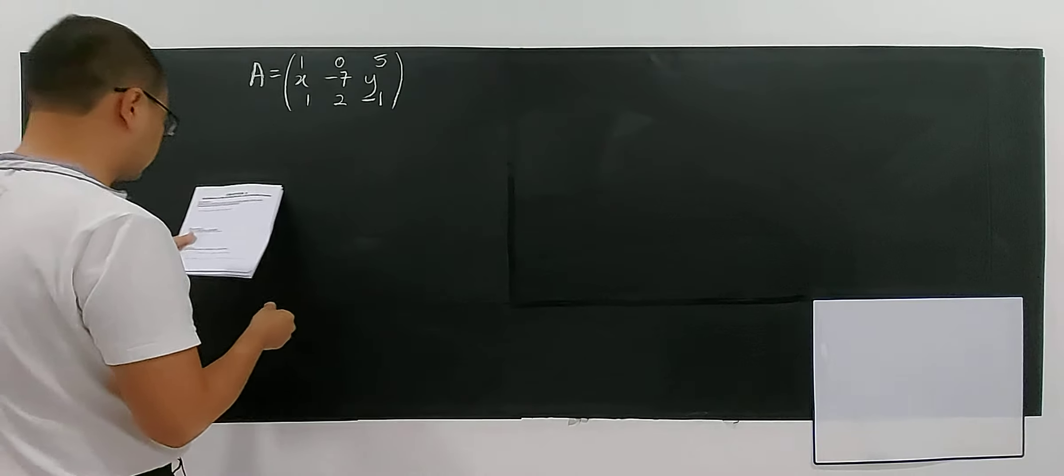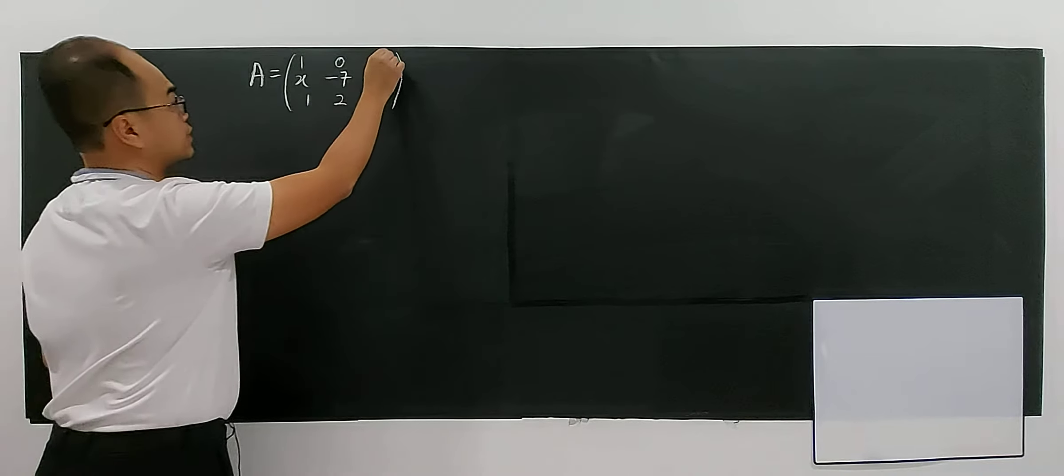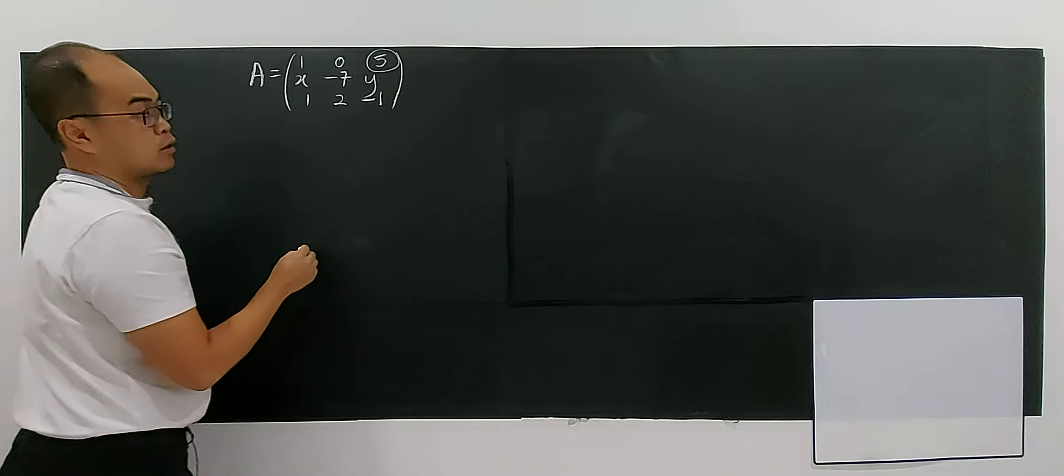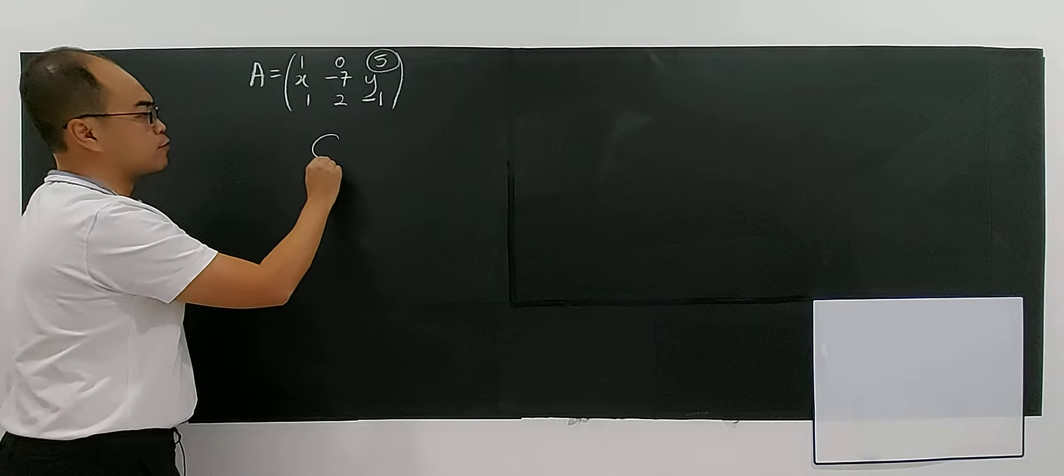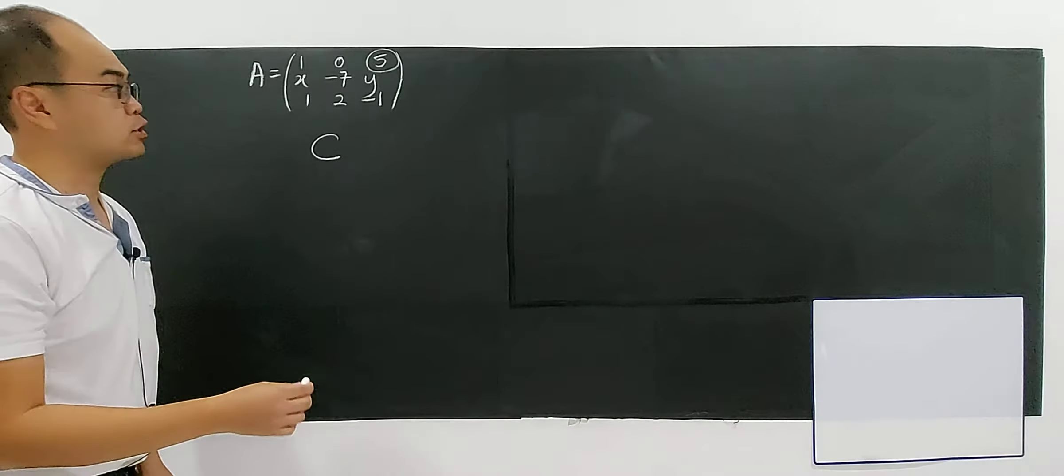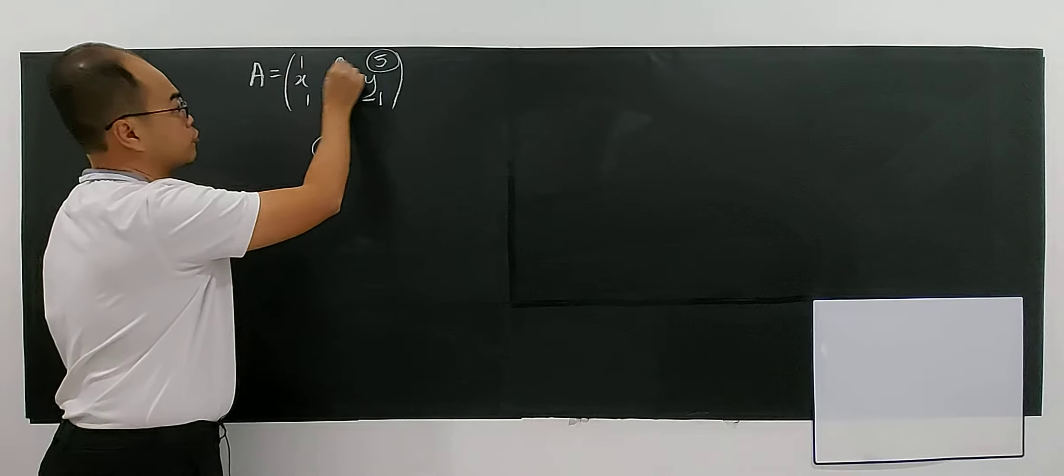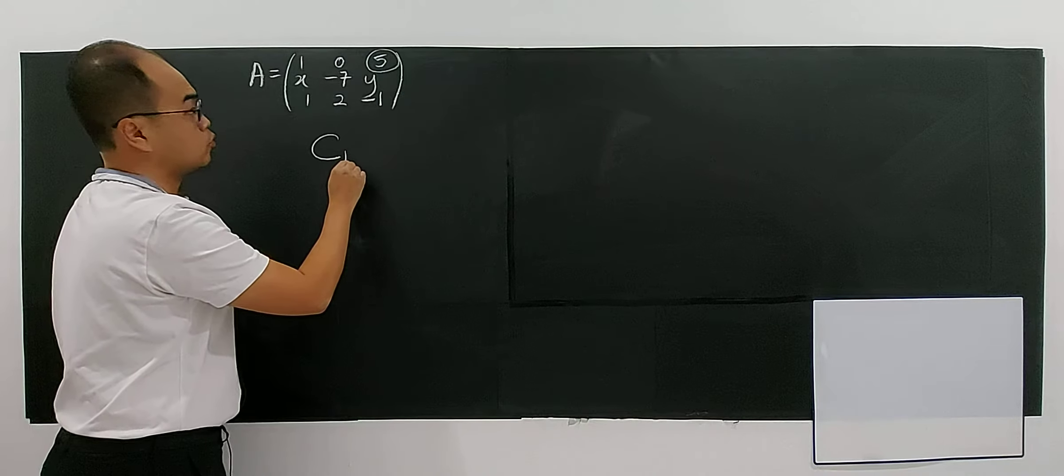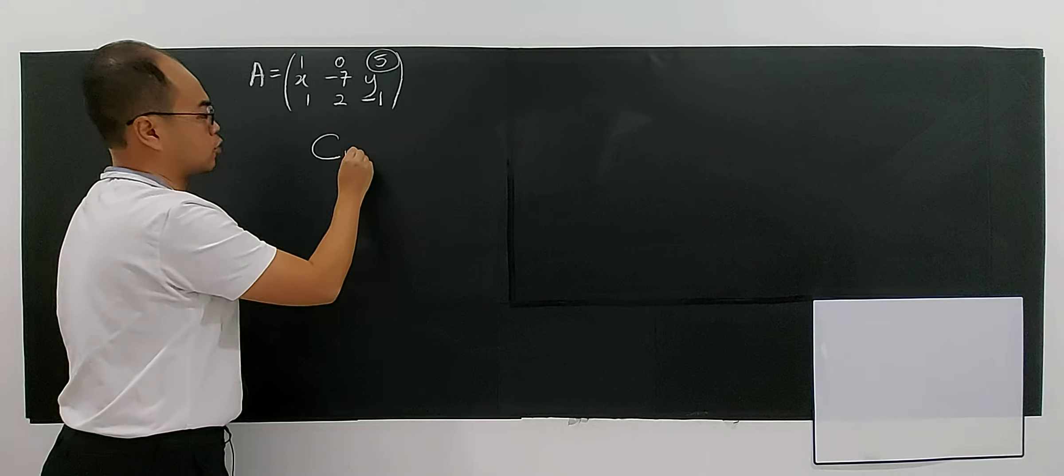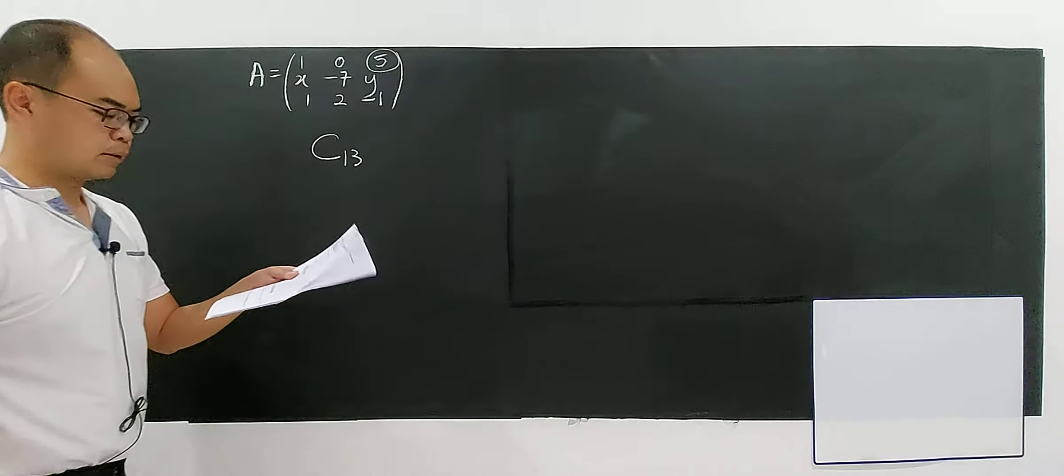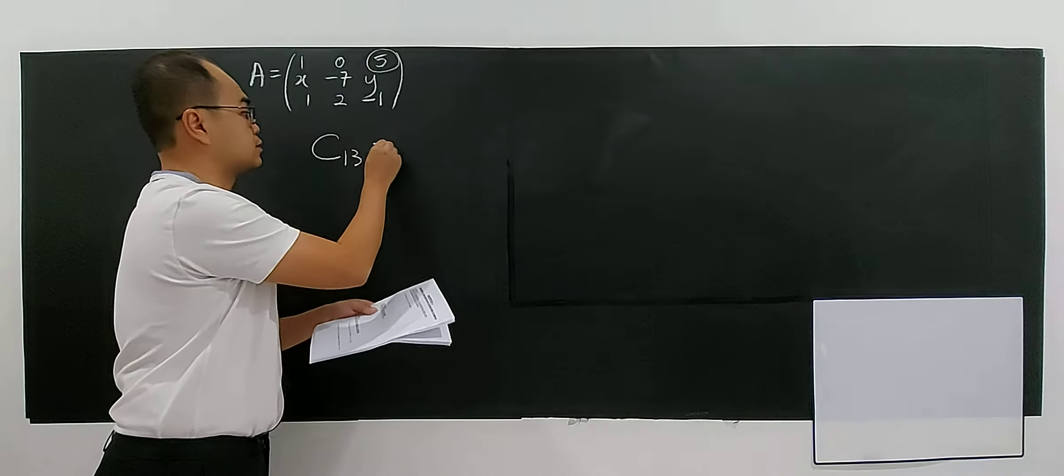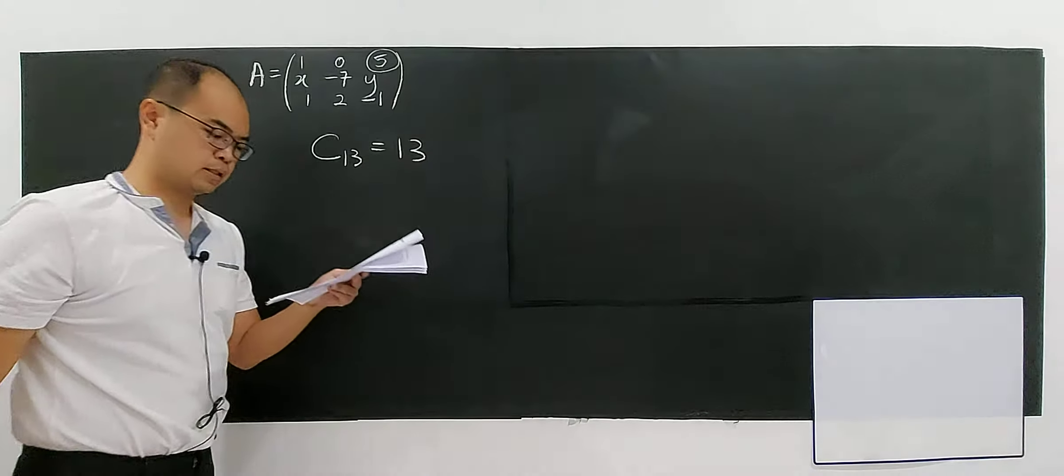So for this example, you can say that cofactor of 5. Cofactor of 5 means refer to this one. So 5 is in which location here. It will be the first row, third column, right? So the minor for 5 is 13. You jot down, it's 13.